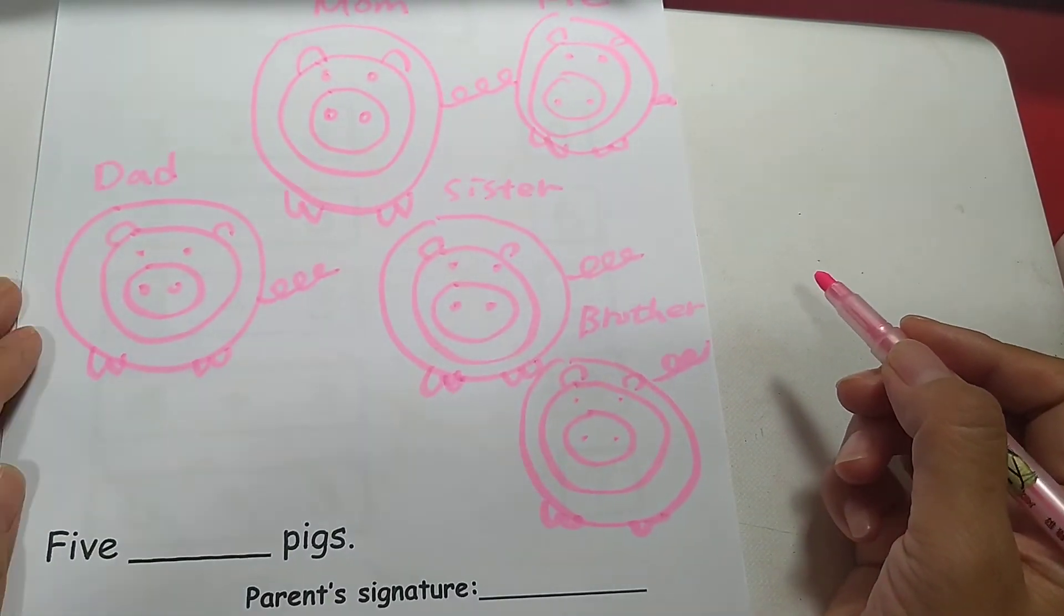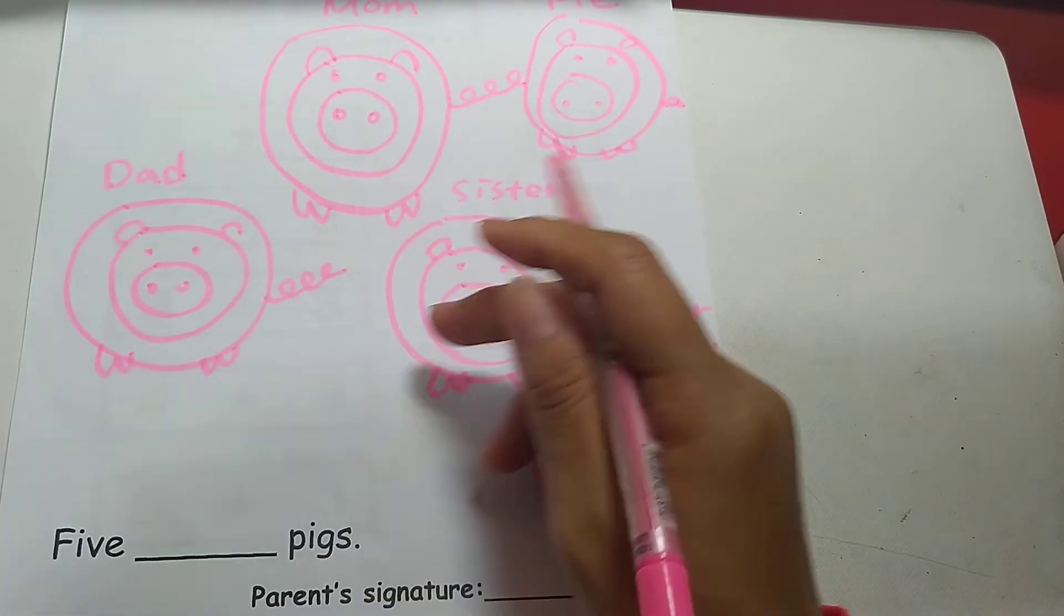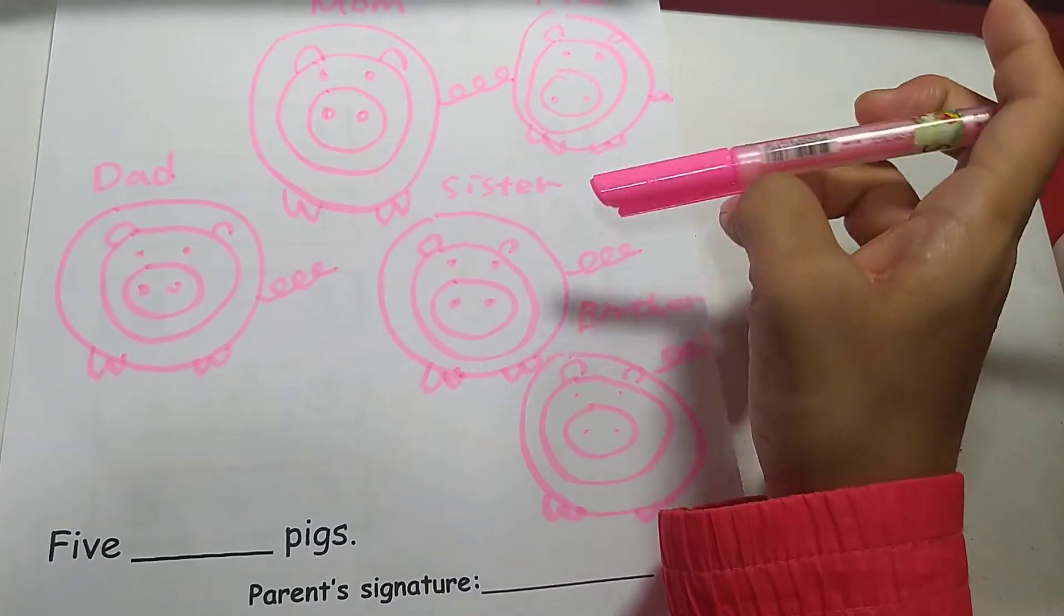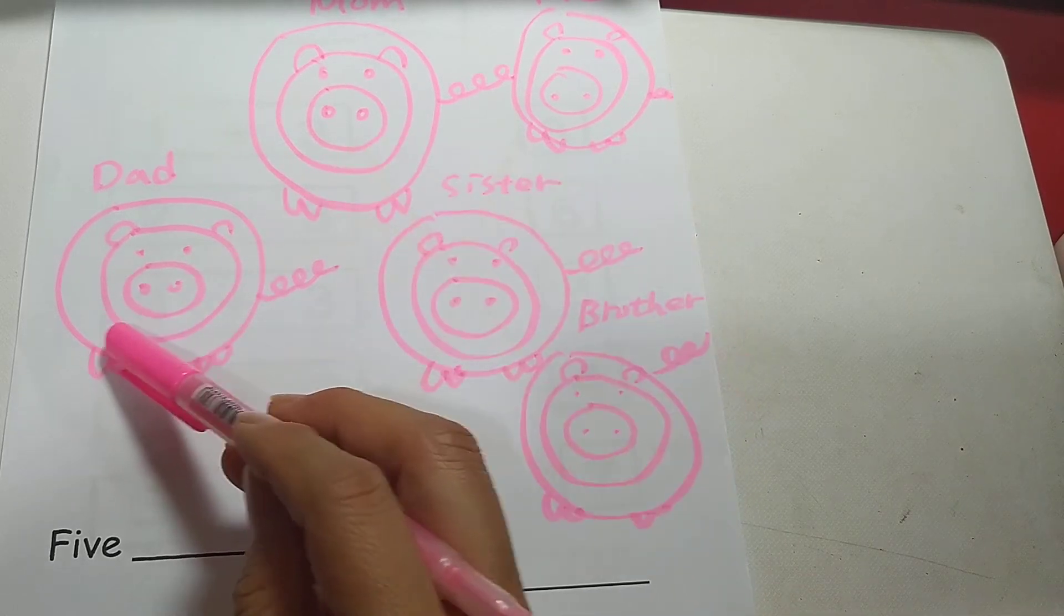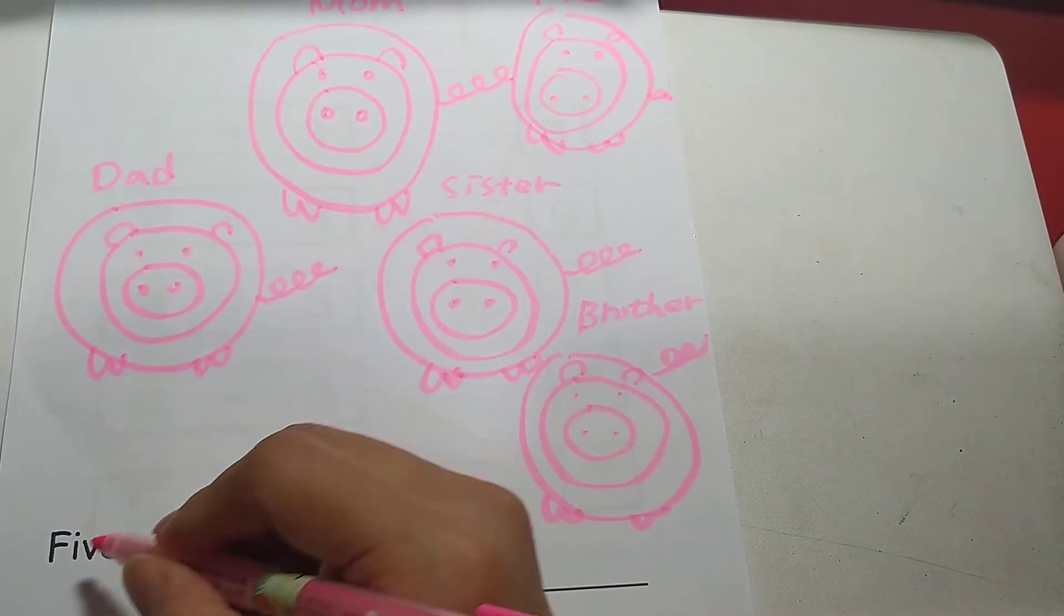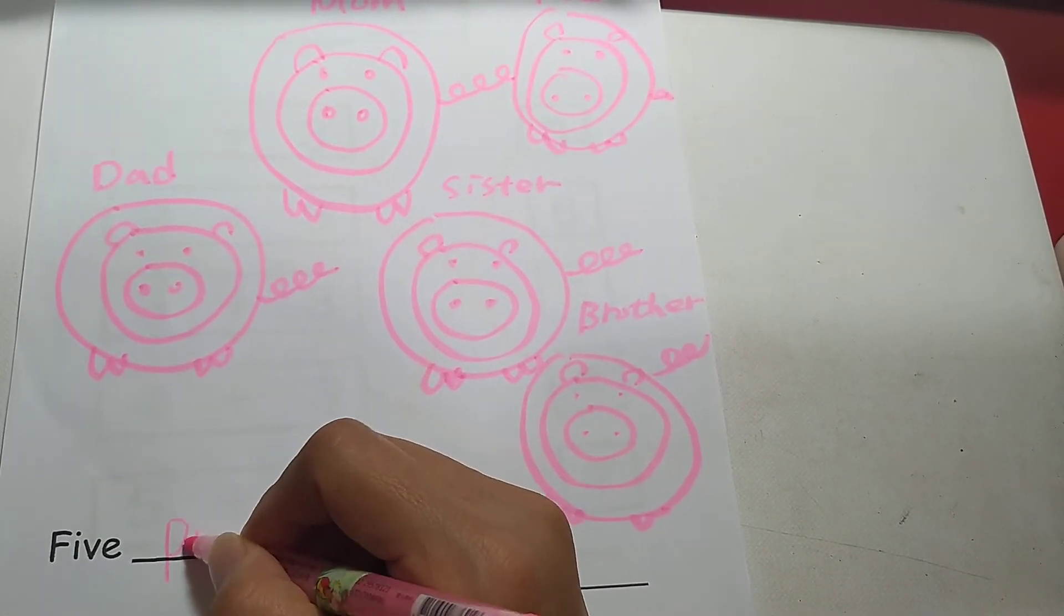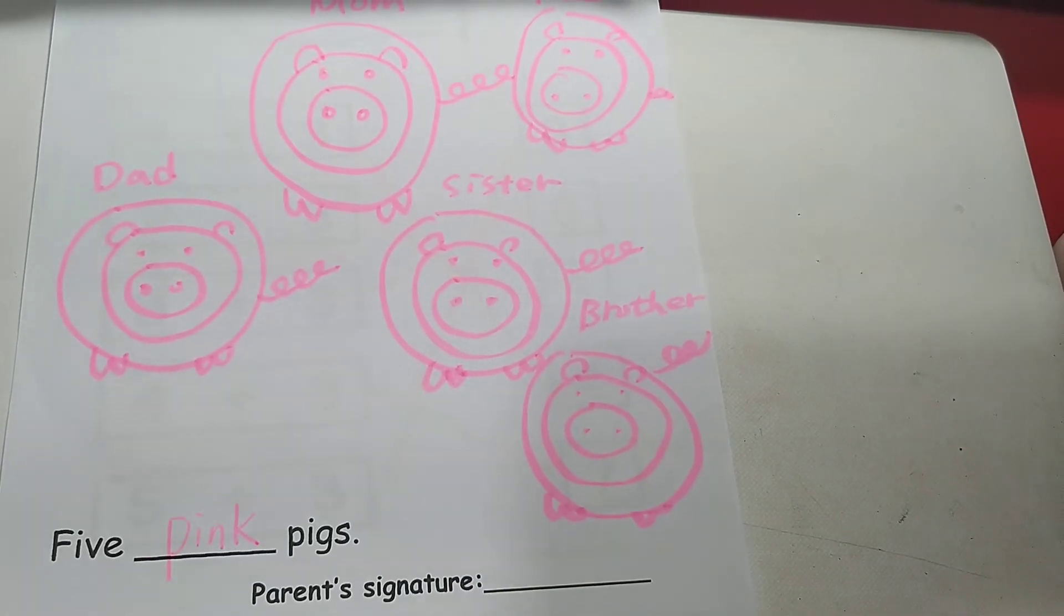We are happy pigs. How many pigs are there? Let's count. One, two, three, four, five. Five pink pigs. Thank you for watching. Goodbye.